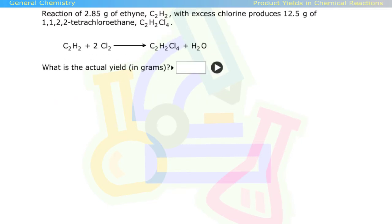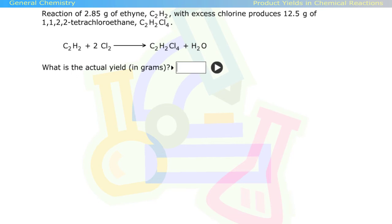Let's try a few more questions. Reaction of 2.85 grams of ethene with excess chlorine produces 12.5 grams of 1,1,2,2-tetrachloroethane.